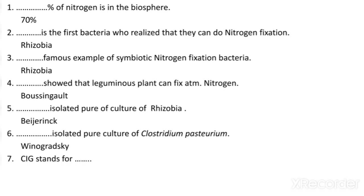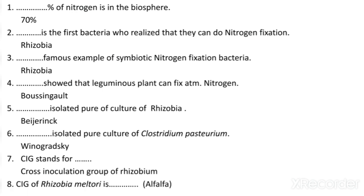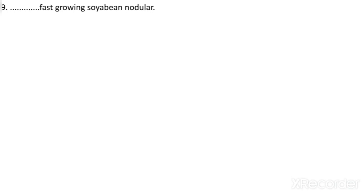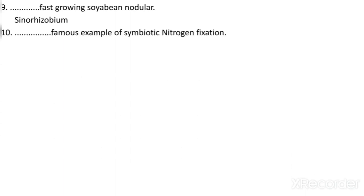CIG stands for Cross Inoculation Group of Rhizobium. It refers to groups of leguminous plants that will develop effective nodules when inoculated with rhizobia obtained from the nodules of any member of that legume group. The CIG of Rhizobium meliloti is Alfalfa. The fast-growing Rhizobium in nodules — its CIG is the bacterium name. The famous example of free-living nitrogen fixation bacteria is Azotobacter.